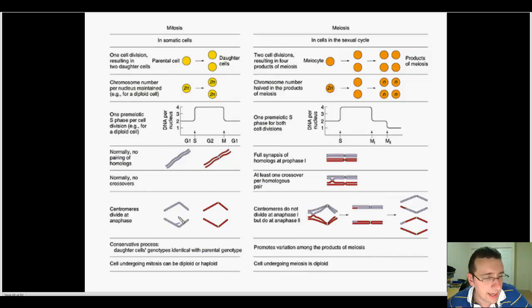Centromeres divide during anaphase in mitosis, but in meiosis, the centromeres do not divide in anaphase I. Instead, the tetrads divide during anaphase I, and then centromeres will divide in anaphase II in a similar process to what happens during mitosis.